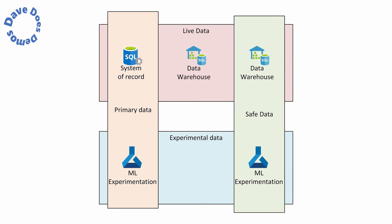Finally, there's a worked example diagram. On the top left we've got the system of record — that is primary live data. We might copy that same data into a data warehouse; this could be a sales system or CRM, and we're pulling that data out and potentially remodelling it, but it's the same data. It's still a live system because the data warehouse itself is a live system in use by the business — therefore we want to back it up, have DR, have access controls, and maintain an SLA. If it were down, that would have an impact on the business.